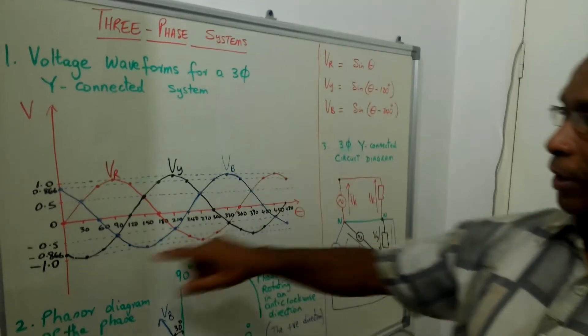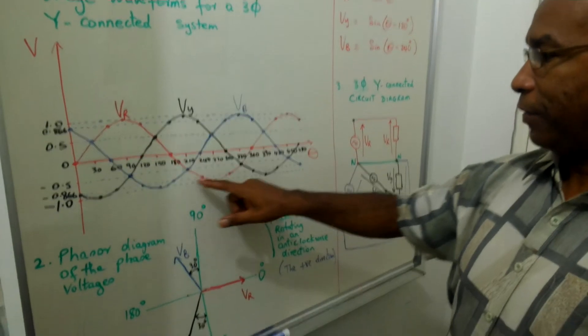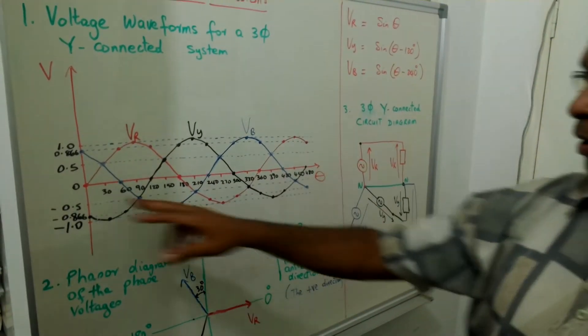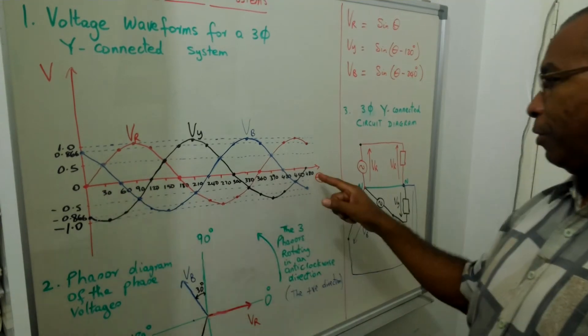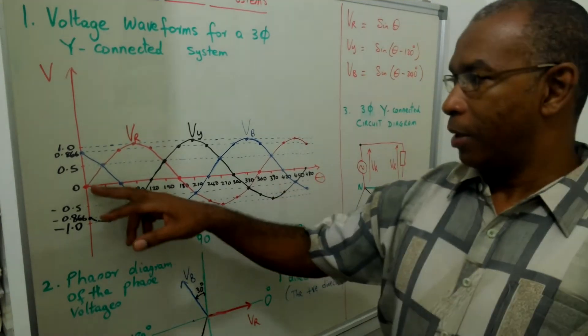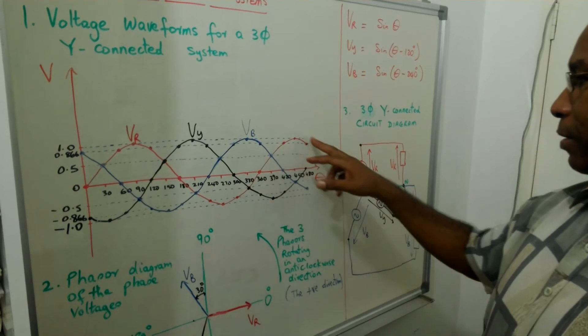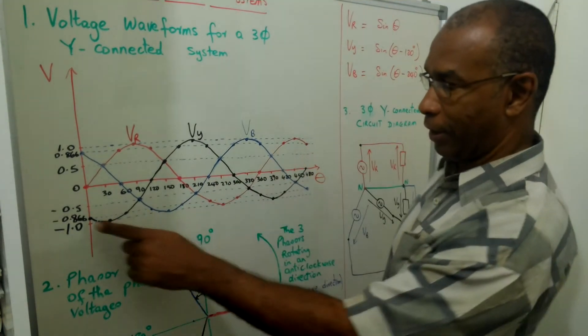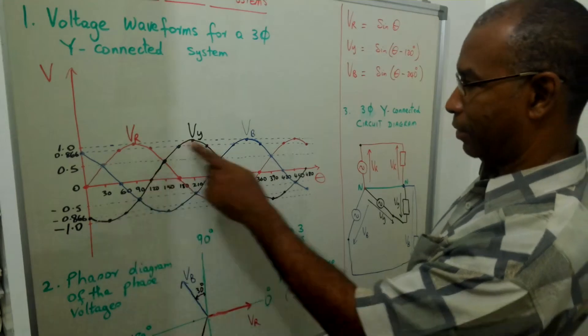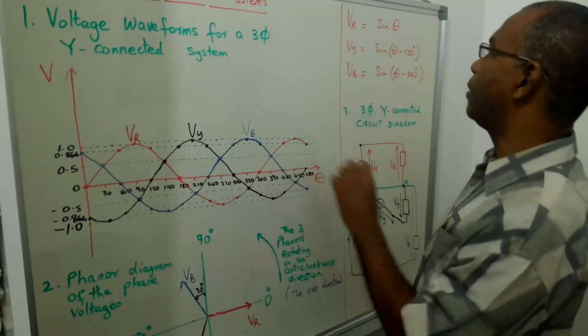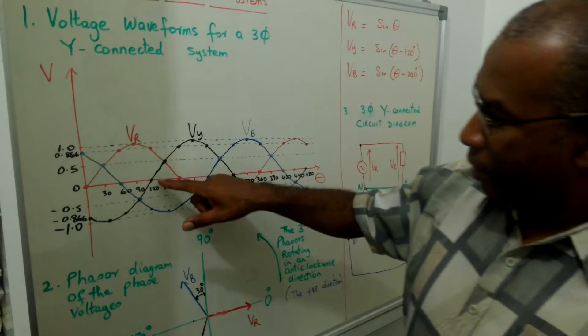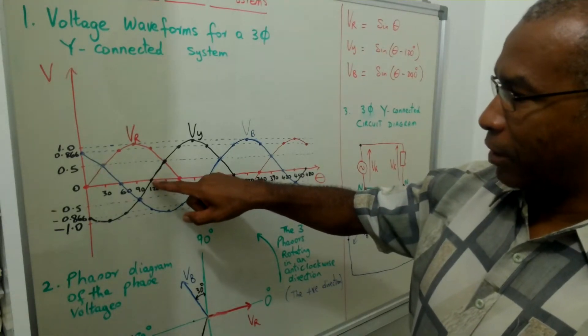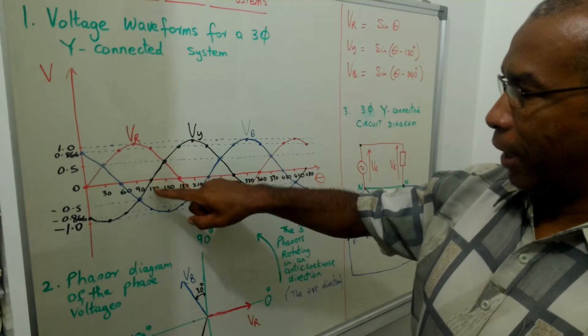Now this can be represented, so these waveforms can be represented by sine waves. So VR, we're starting at zero and we are plotted from zero up to 480 degrees. So VR is represented by this red sine wave. So VY is represented by the black sine wave because I don't have a yellow color. And you will notice that it crosses the zero axis first here at 120 degrees.